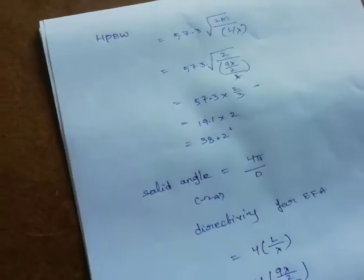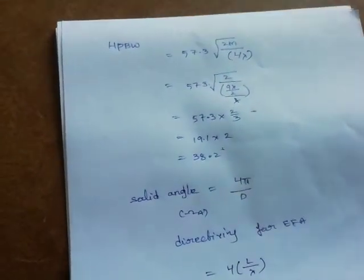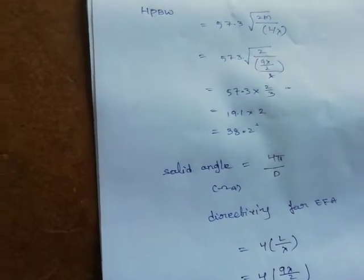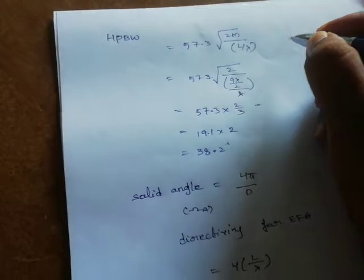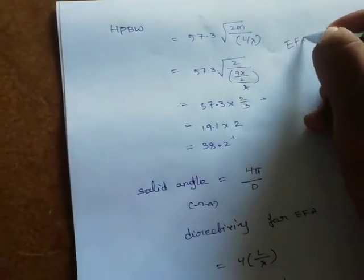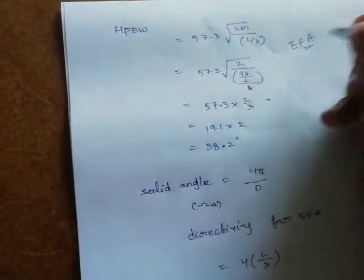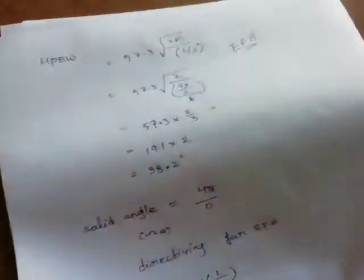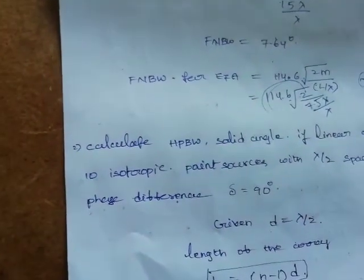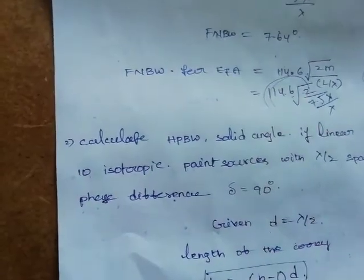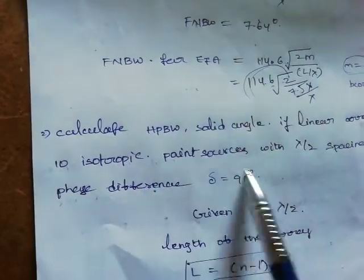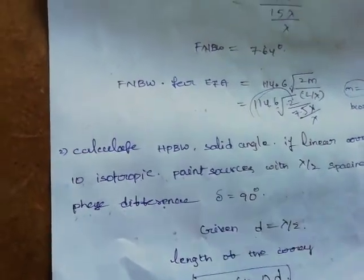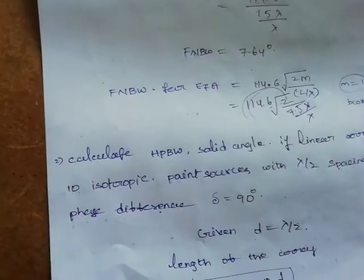For Problem 2, we identify this as an end fire array case. How do we know? The problem states a phase difference of 90 degrees. In broadside array the phase difference is zero; here with 90 degrees phase difference this is an end fire array, so we use the end fire HPBW formula.